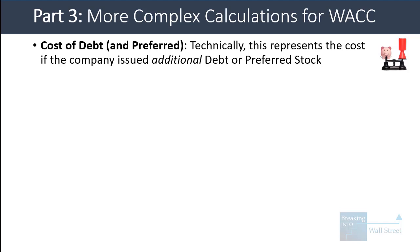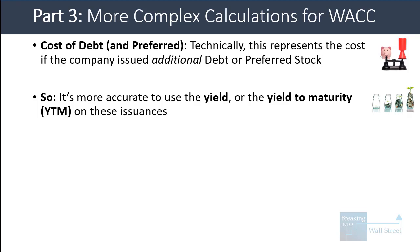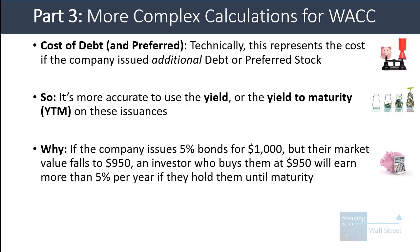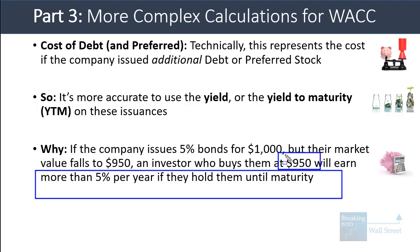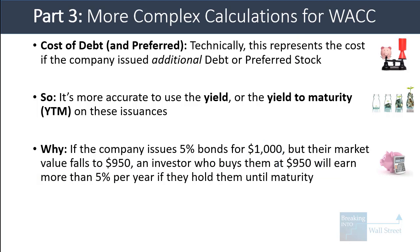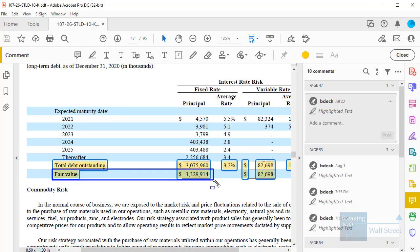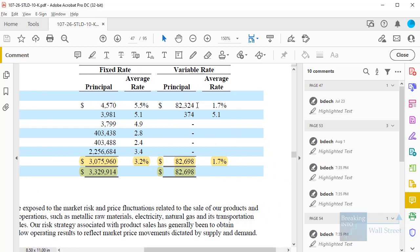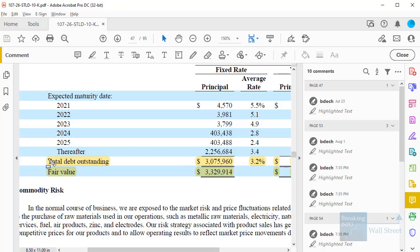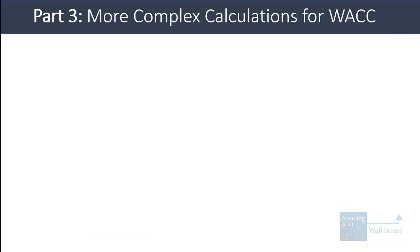It's more accurate to use the yield to maturity, or YTM, on these issuances. For example, if a company issues 5% coupon rate bonds for $1,000 but their market value falls to $950, you could buy them at $950 and earn more than 5% per year because you bought at $950 but get back $1,000 when the company repays. Vice versa, if they trade at $1,050, you earn less than 5%. So it's useful to search for the fair value of the debt in the company's annual or interim filings. Steel Dynamics discloses their fair value and the average coupon rate on all these tranches.